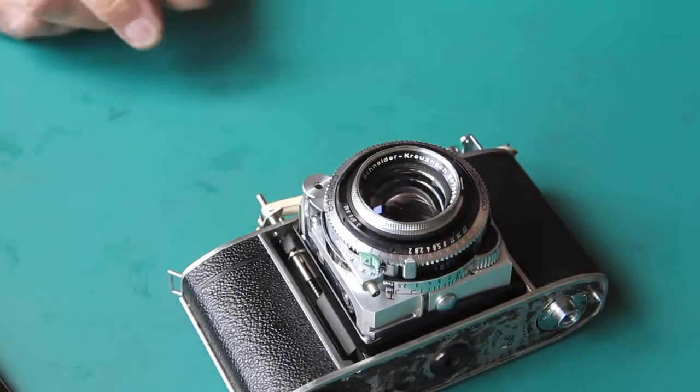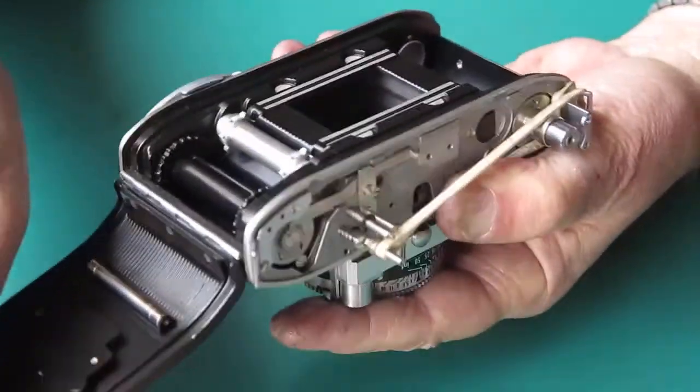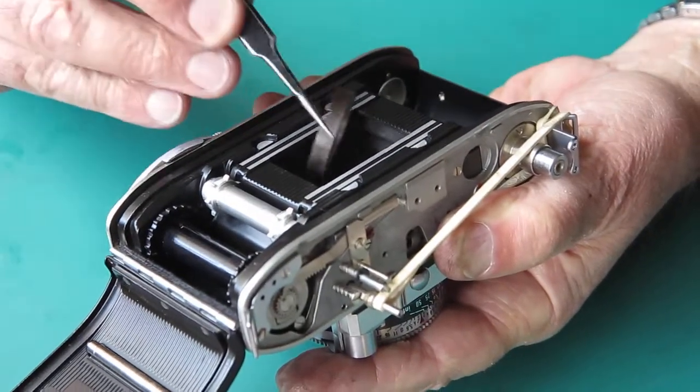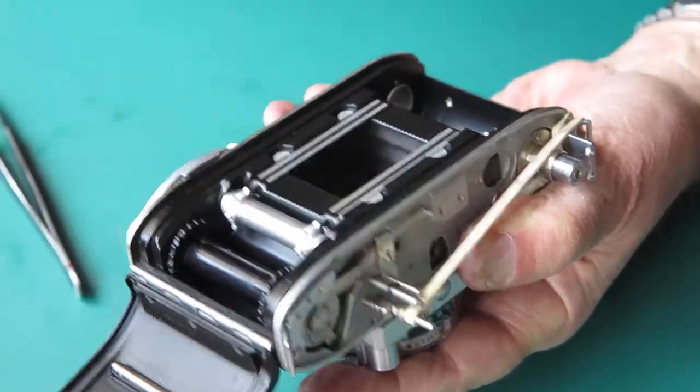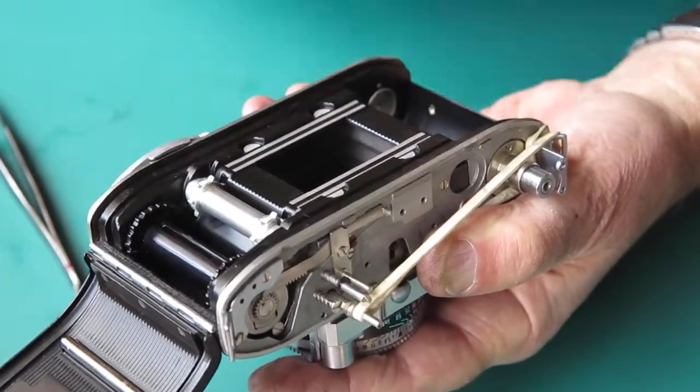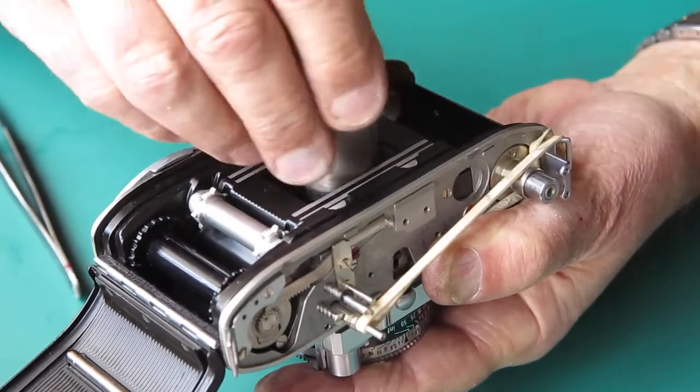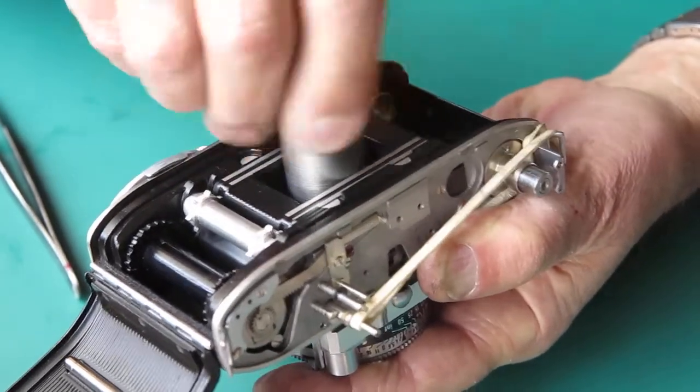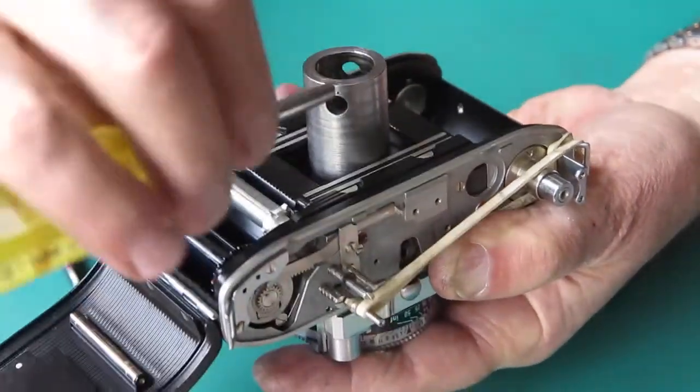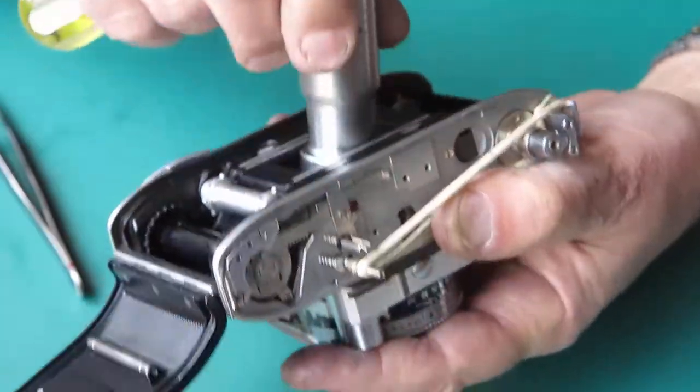I'd rather the shutter cocks just slightly before the film advance reaches the end of the stroke so that we can be sure that the shutter will cock correctly, even if there's a bit of wear and tear in the cocking rack and things don't move as far as they might. So I'll put the retaining ring in place. Tighten that up.